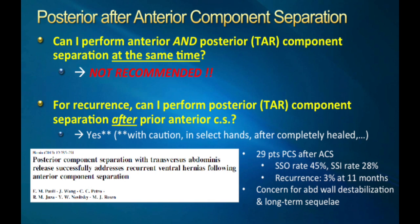Another question that comes up is about doing anterior and posterior component separation together — that is, doing TAR and external oblique release simultaneously. I would strongly discourage doing both at the same time. The reason is that you only have three lateral muscles. If you cut two of those three, you have a good chance of destabilizing that lateral abdominal wall. Therefore, pick whichever one you're most comfortable with — whether it be external oblique release or transversus abdominis release — and go with that technique.